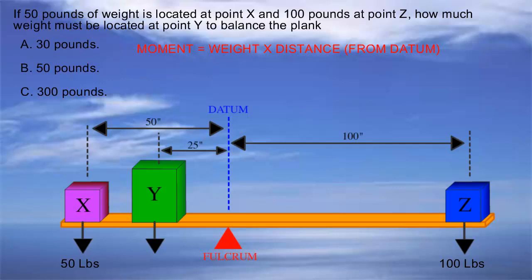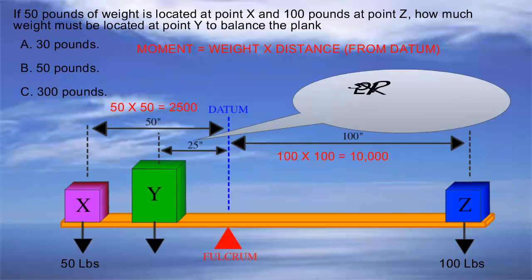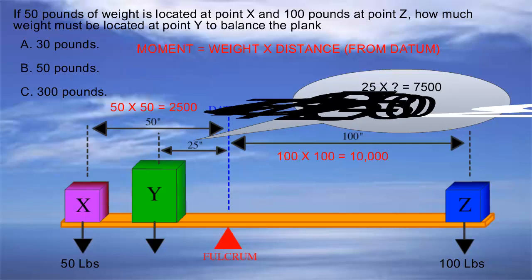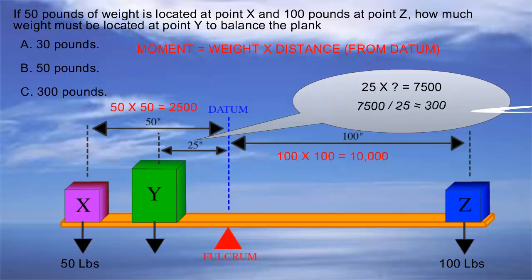Let's start from the right side. We can see that the total moment is 10,000, given by multiplying weight Z of 100 pounds by the distance of 100 inches. Now we know that the total moment we need on the left side must be the same, 10,000 pounds, if we want to balance the plank. So far, we only have 2,500, given by multiplying the weight X of 50 pounds by its distance from the datum, which is 50 inches. Finally, the weight of Y multiplied by its distance of 25 inches needs to be equal to 7,500, which is the difference between 10,000 pounds on the right side and 2,500 on the left side. All we need to do is divide 7,500 by 25 to find out that our weight must be 300 pounds.